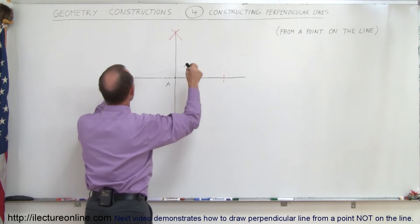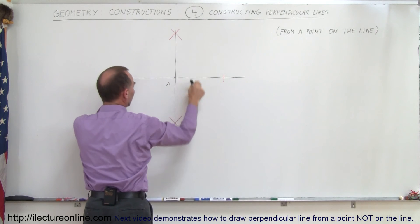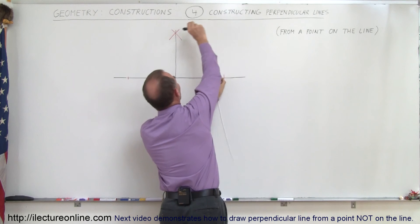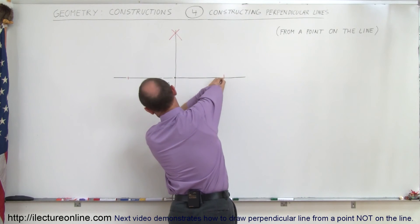Then you go to the point right there, draw an arc in this direction, draw an arc here, and come over this side. Keep the exact same size, draw an arc this way, draw an arc down there.